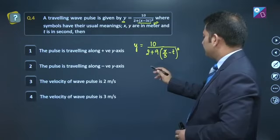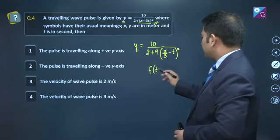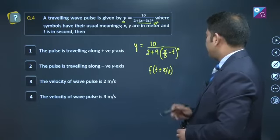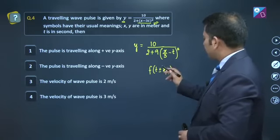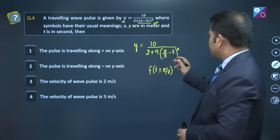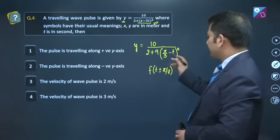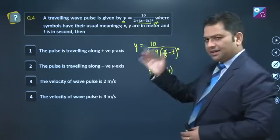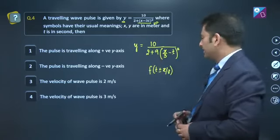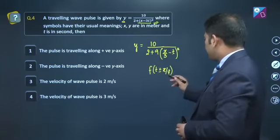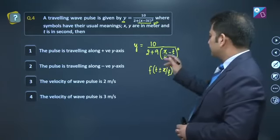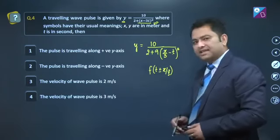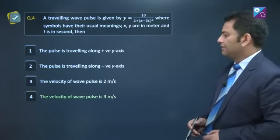By the way, what does y give? Y gives the direction of oscillation of the particle. That's why options 1 and 2 are wrong. For velocity, all you have to do is write y = 10/(2 + 9(x/3 - t)²). Why am I doing this? You'll see now. This becomes (x/3 - t)². Actually, we want to compare it with this format: t ± x/v. In this format, the coefficient of t is 1. Don't worry about the minus sign - you can always think minus is for the direction part. The denominator of x is the velocity. Here x's denominator is 3, so the velocity is 3 meter per second. Option number 4.